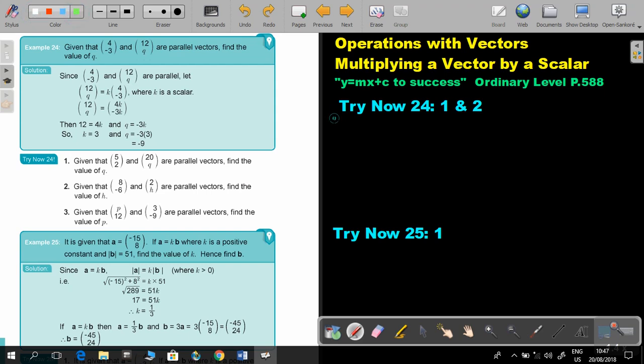Let's start, number 1, given that this and this are parallel vectors, find the value of Q. Now, what did we do? We write the bigger one, the 20, in front, and then we make, there's a scalar, and then we write the 5 and the 2. And now we're just going to multiply in that scalar. So, we're going to get 5K and 2K.